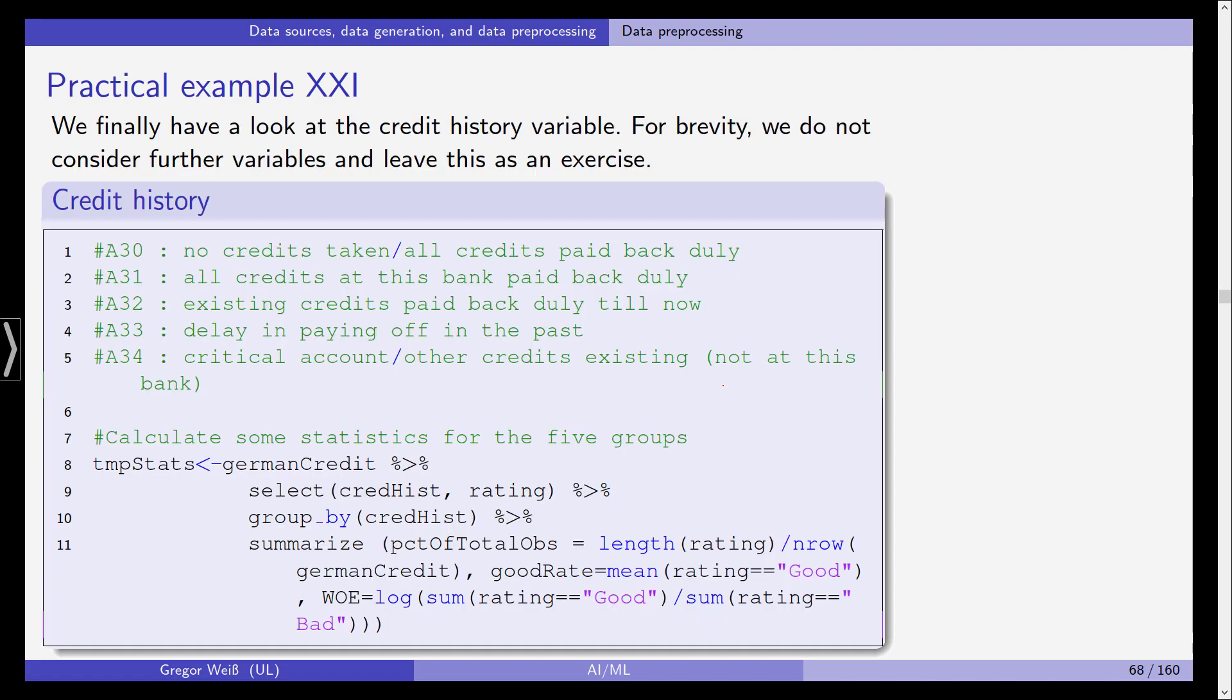Now finally, we also have a look at the credit history variable. And for brevity, we do not consider further variables. Remember that we actually had 20 covariates in our data sample. We could have used additional variables, but we are only showing the credit history, checking account status, and loan duration.